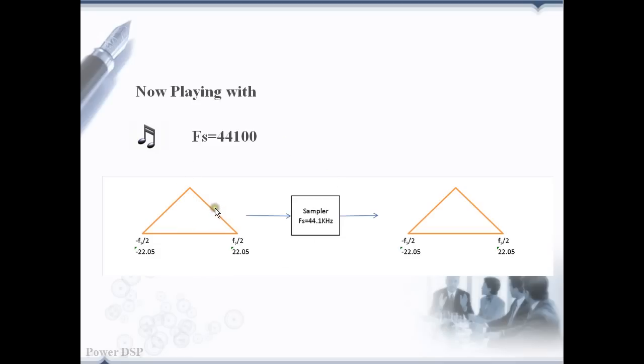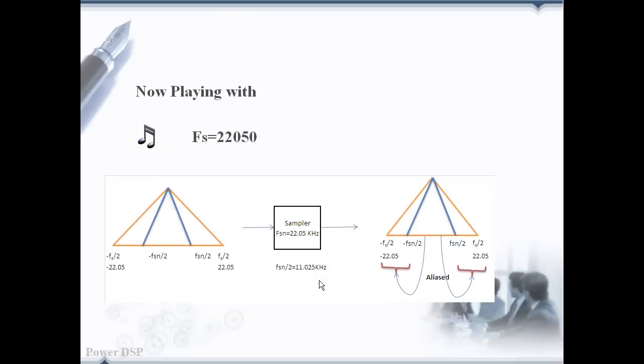We have played the original piece of song which is having the sampling frequency of 44.1 kHz. The spectrum is from minus Fs by 2 to Fs by 2. That is from minus 22.05 kHz to 22.05 kHz. Next, the sampling frequency is reduced to 22.05 kHz. And let's see how it sounds.